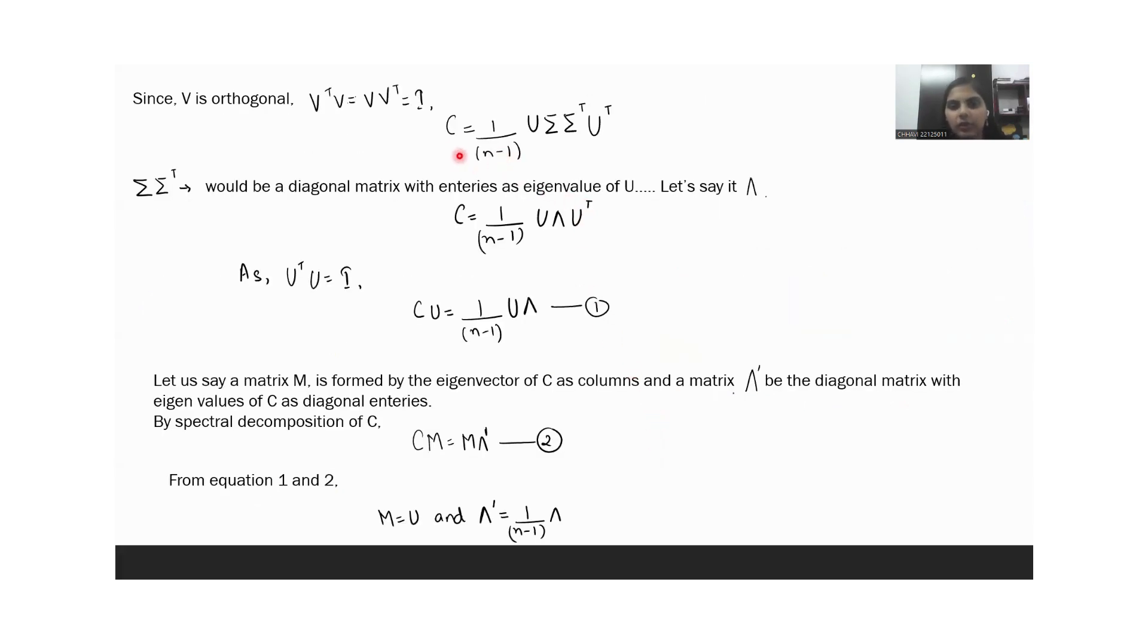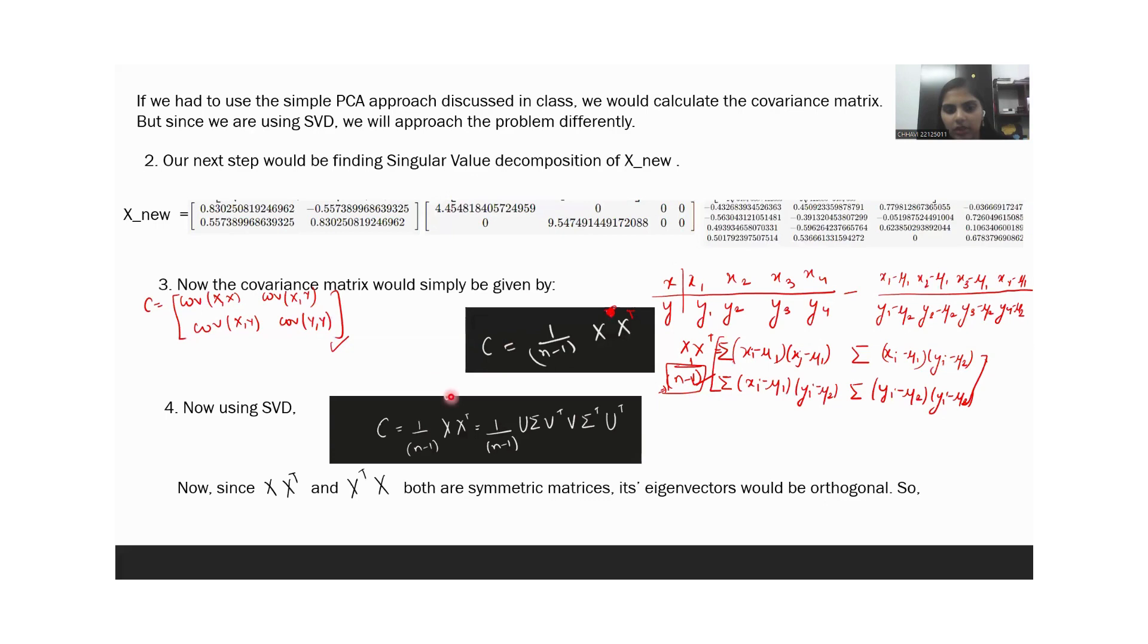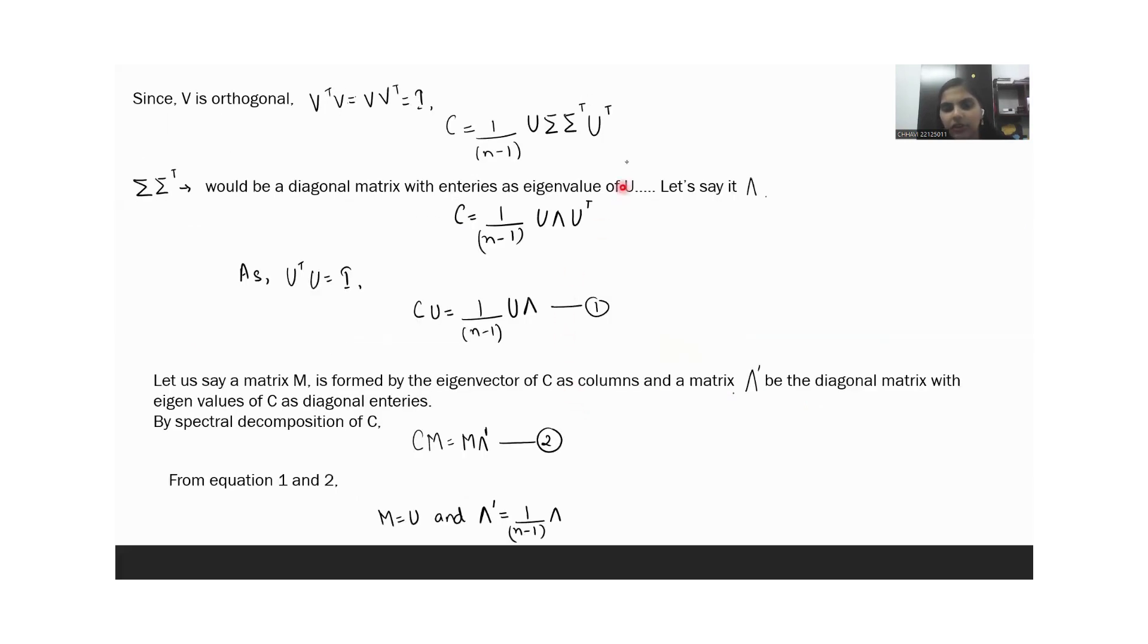C would reduce to U Sigma Sigma transpose U transpose. Sigma times Sigma transpose would be a diagonal matrix with its diagonal elements equal to the eigenvalues of U. We would call this lambda. So C would come out to be this.